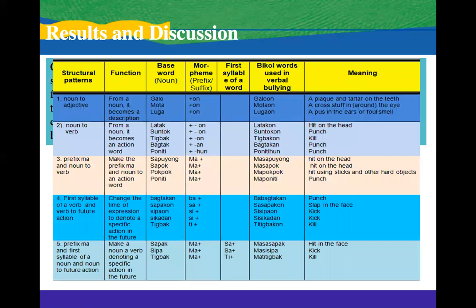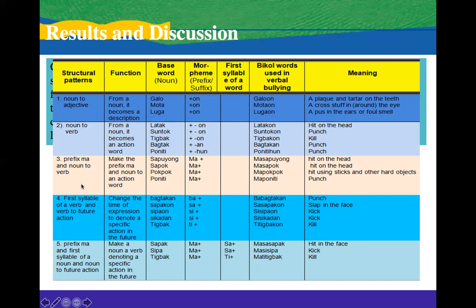These are the structural patterns observed. Noun to adjective: from a noun, it becomes a description or adjective — for example, 'galo' plus the morpheme or suffix '-on' becomes 'galo-on,' meaning a plague and tartar on the teeth in Bicol. Another example: 'mo-ta' plus suffix '-on' becomes 'mo-ta-on,' meaning crust around the eye. Other patterns include noun to verb, prefix ma, first syllable of a verb, and verb to future action — making a noun into a verb denoting a specific action in the future.